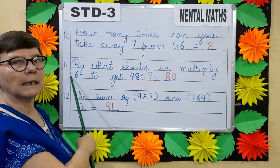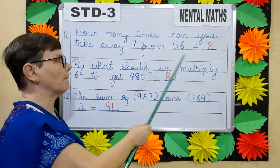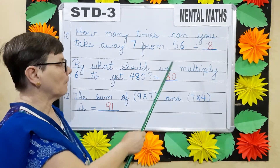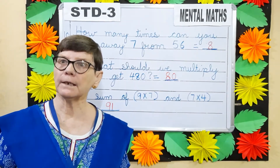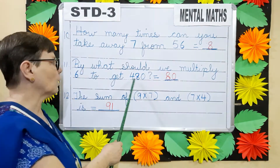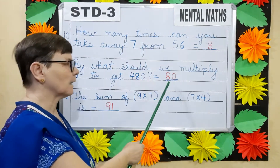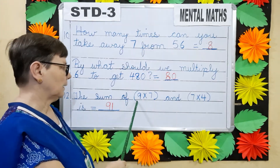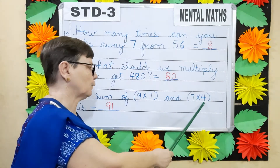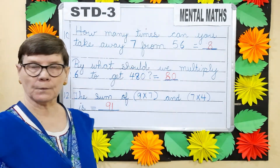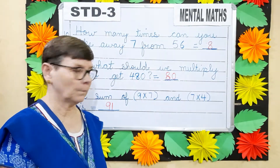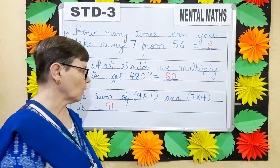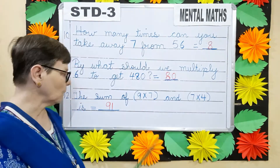Question number 11: By what should we multiply 6 to get 480? Now multiply is the opposite of division, so divide 480 by 6. We will get 80 as the answer. Question number 12: The sum of 9 into 7 and 7 into 4 is equal to dash. 9 sevens are 63, 7 fours are 28, and sum means add. So 63 plus 28 will give you 91.